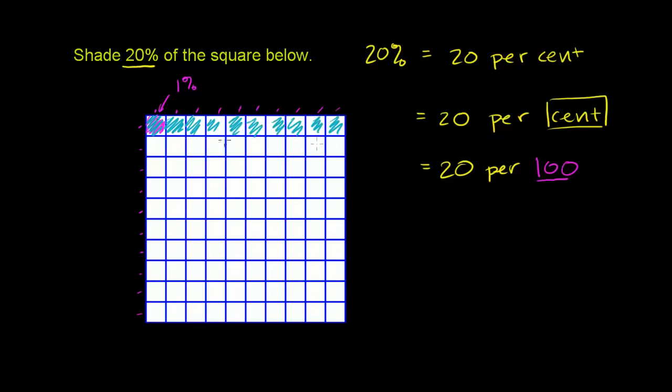And then we want to do 20, so that'll be one more row. I can shade in this whole other row right here. Then I would have shaded 20 of the 100 squares. Another way of thinking about it, if you take this larger square and divide it into 100 equal pieces, I've shaded in 20 per 100, or 20% of the entire square. Hopefully that makes sense.